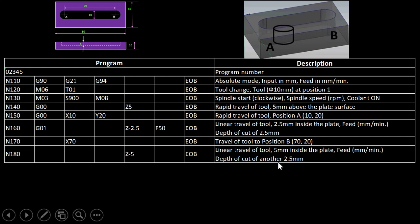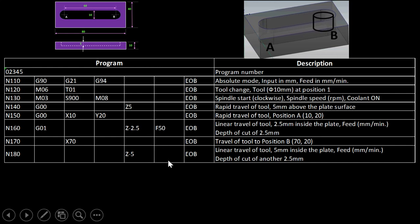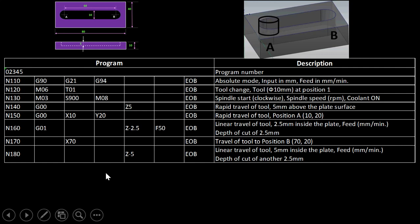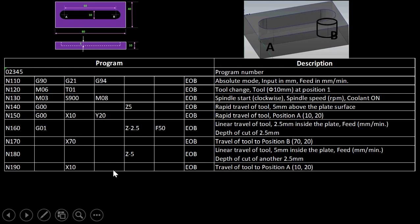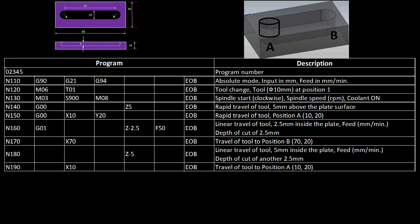The feed remains the same so it is not rewritten. Once the 5 mm depth is achieved, the cutter must return from B to A. In the next block we write X10 so the cutter travels back from B to A after taking the second 2.5 mm cut, completing the full 5 mm slot depth.